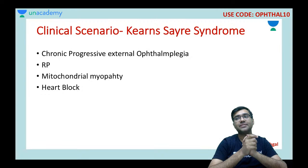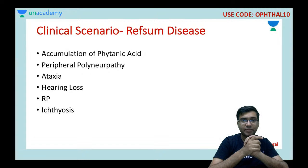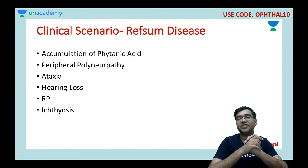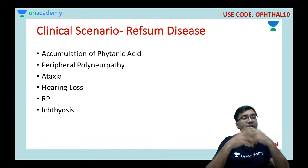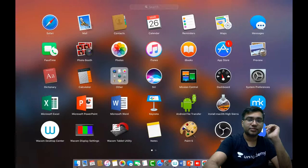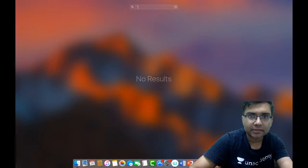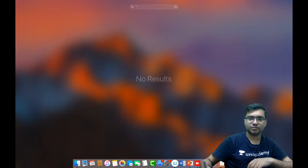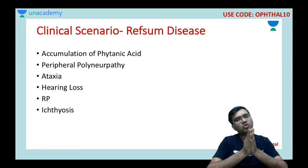Refsum disease is caused by accumulation of phytanic acid due to deficiency of the enzyme that degrades it. It presents with peripheral neuropathy, ataxia, hearing loss, retinitis pigmentosa, and ichthyosis. Patients with these findings should be screened for RP.